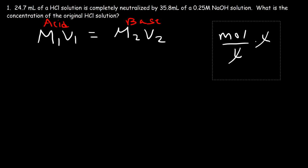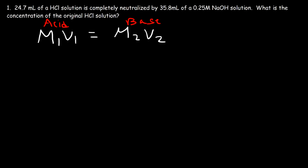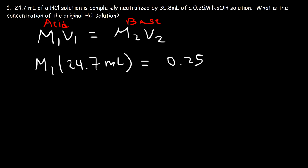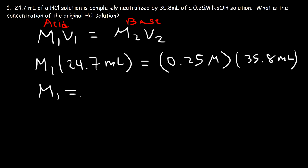In a neutralization reaction, the moles of acid must equal the moles of base, which is why that formula works. We're looking for the concentration of the HCl solution, M1. V1 is 24.7 milliliters, M2 is 0.25 moles per liter, and V2 is 35.8 milliliters. So M1 = 0.25 × 35.8 ÷ 24.7, giving a concentration of 0.362 moles per liter (0.362 M).